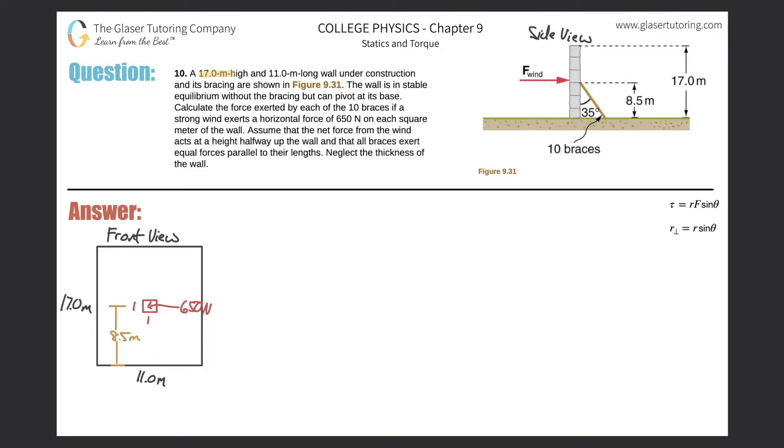Number 10. A 17-meter high and 11-meter long wall under construction and its bracing are shown in Figure 9.31. The wall is in stable equilibrium without the bracing but can pivot at its base. Calculate the force exerted by each of the 10 braces if a strong wind exerts a horizontal force of 650 newtons on each square meter of the wall. Assume that the net force from the wind acts at a height halfway up the wall and that all the braces exert equal forces parallel to their lengths. Neglect the thickness of the wall.